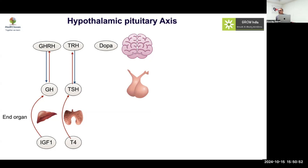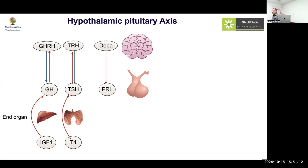Dopamine is interesting. Until now we are talking about peptides; dopamine is a simple derivative of an amino acid. It is inhibiting prolactin. So I have talked about two which are stimulatory and one which is inhibitory. The others are also all stimulatory. So the predominant tone that the hypothalamus sets for the pituitary is stimulatory, with an exception of prolactin.